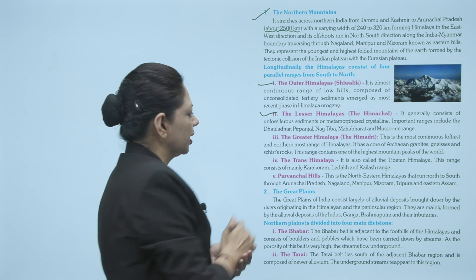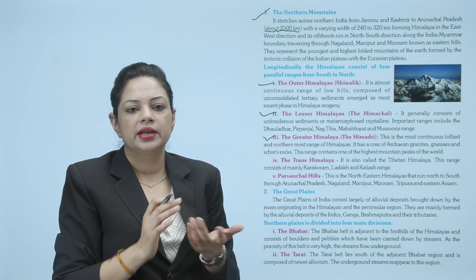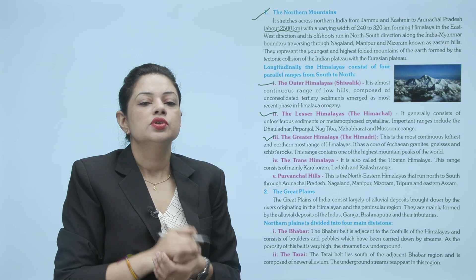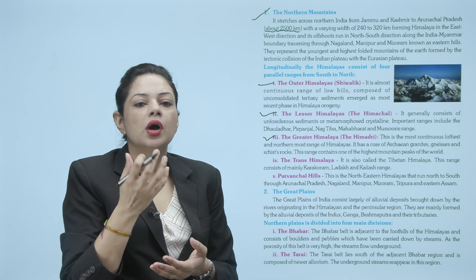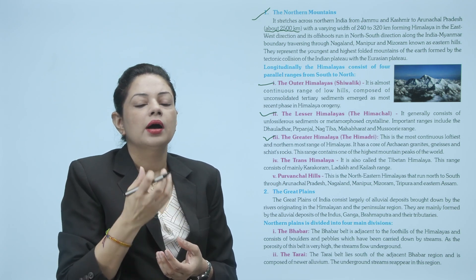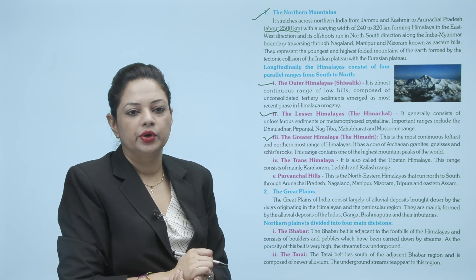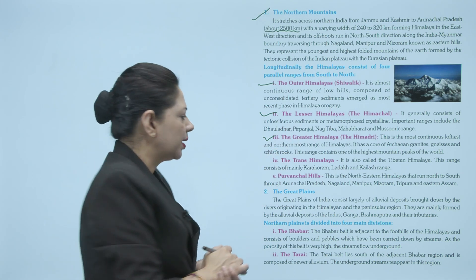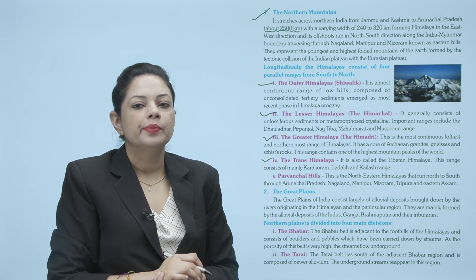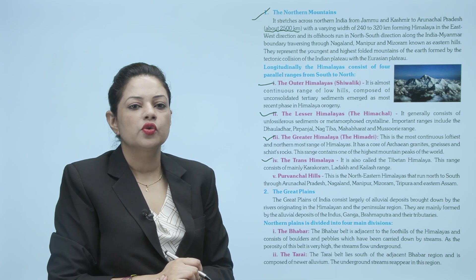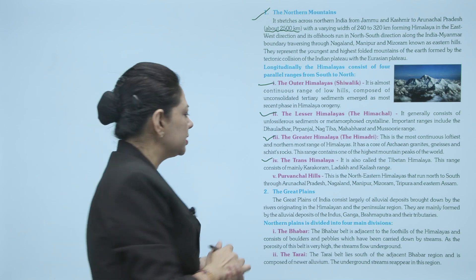Uske baad hai greater Himalayas, yaani ki Himadri, jo hamesha poore saalon saal barf se covered rehti hai — sabse jo top layer hai woh aapki Himadri ki layer hai. Jo highest peaks hain, the highest peaks of the world, woh aapki greater Himalayas mein lie karti hain. Next is the trans Himalayas, jo Tibetan Himalayas bhi kehlaate hain. This range consists mainly of Karakoram, Ladakh, and Kailash range.